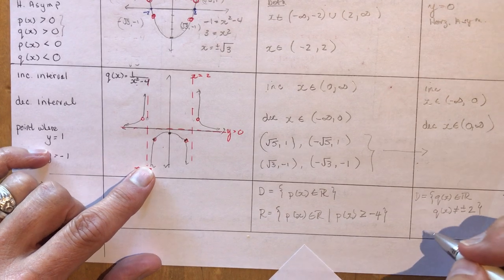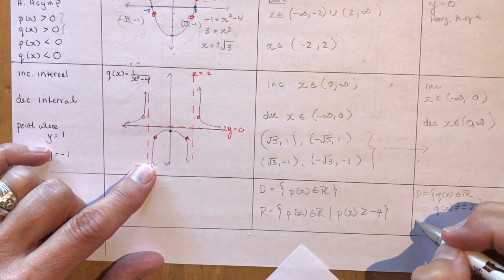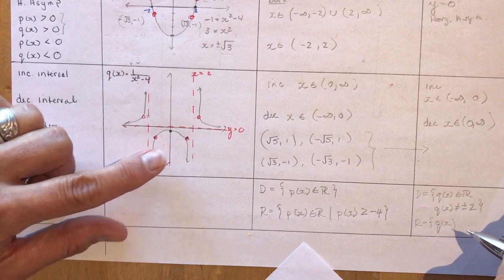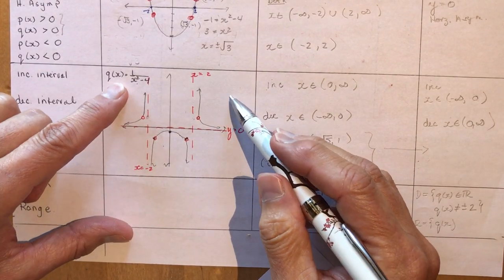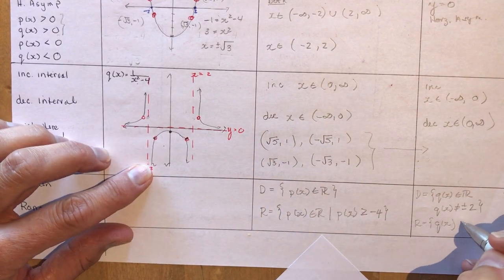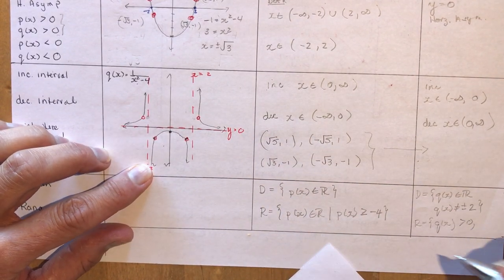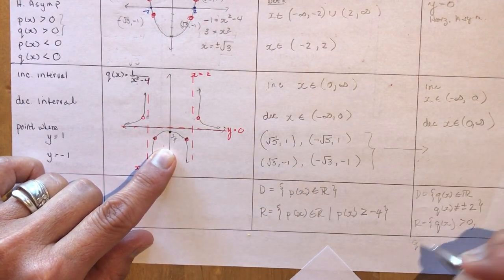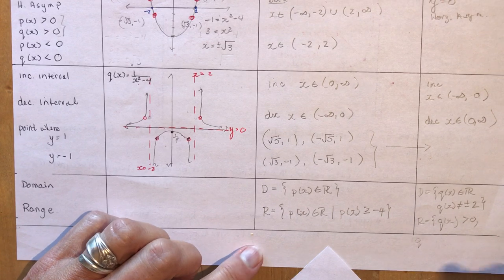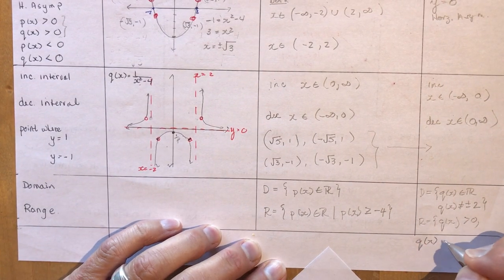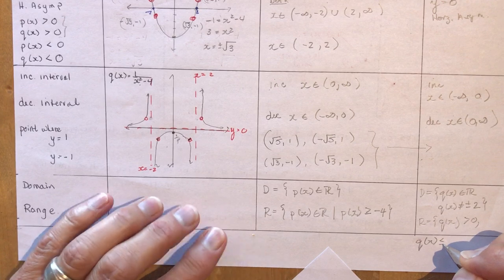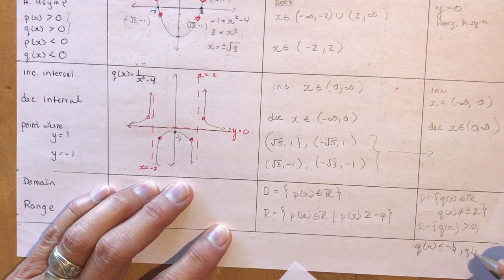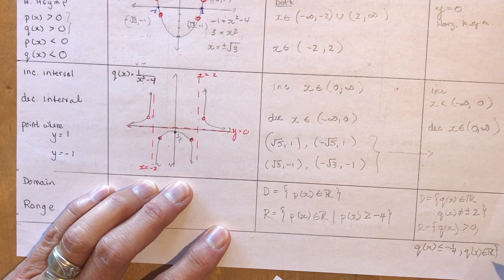The range for q(x): q(x) is greater than 0, or q(x) is less than or equal to negative one quarter. That covers the domain and range for both the original and the reciprocal function.